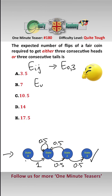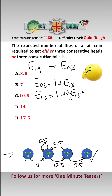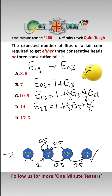We can use recursion to write the following formulas. E_03 is 1 (the first coin toss) plus E_13. E_13 is 1 (a coin toss) plus one-half E_13 plus one-half E_23. E_23 is 1 (a coin toss) plus one-half E_13 plus one-half E_33. E_33 equals 0 because that means we have completed our task.